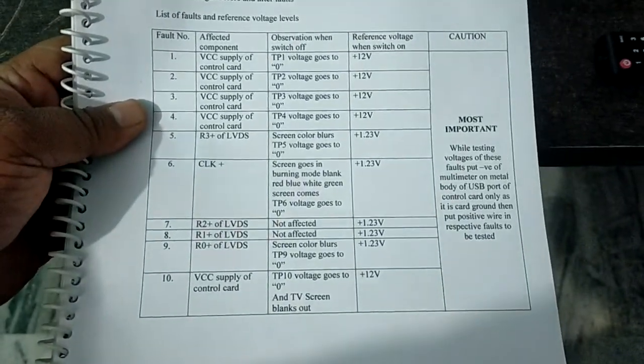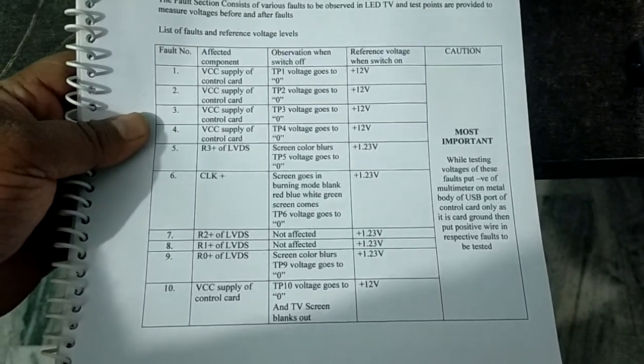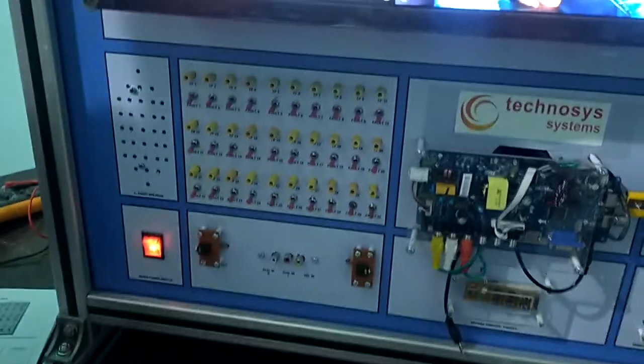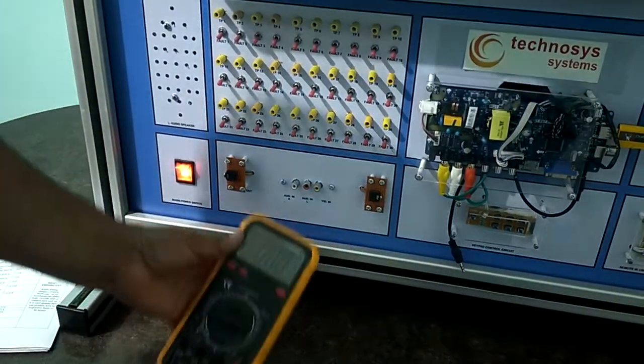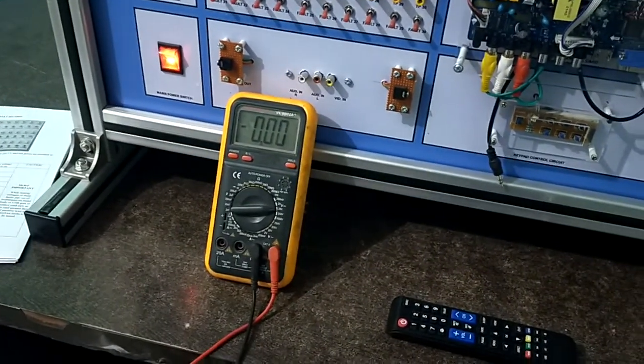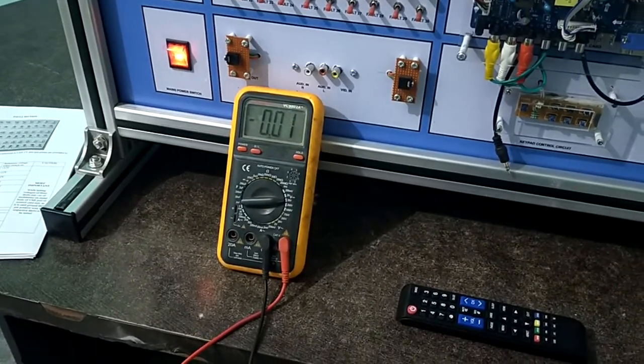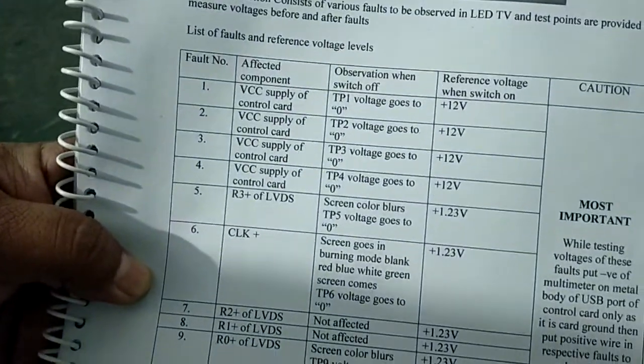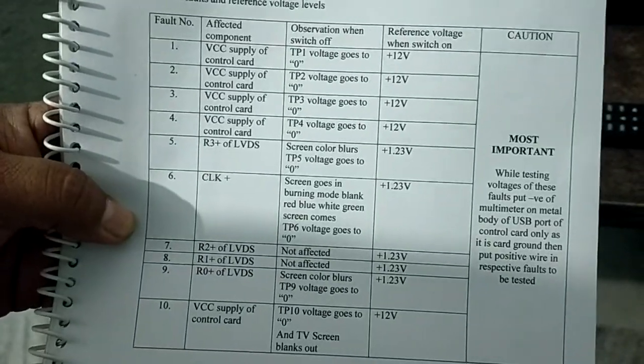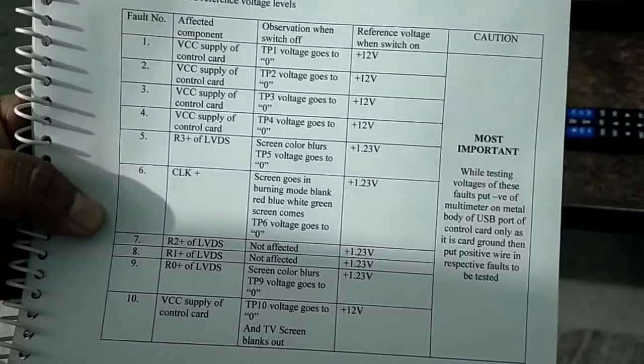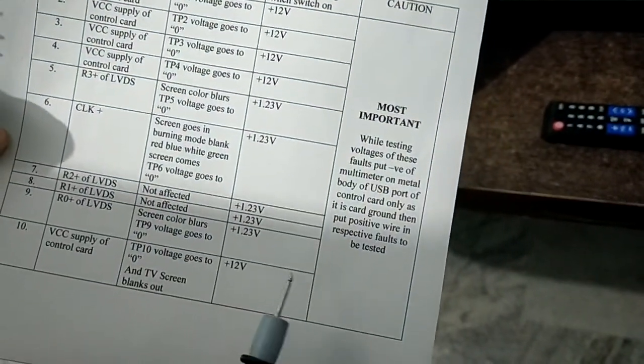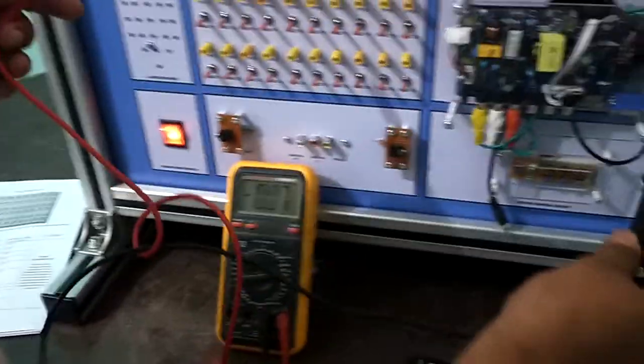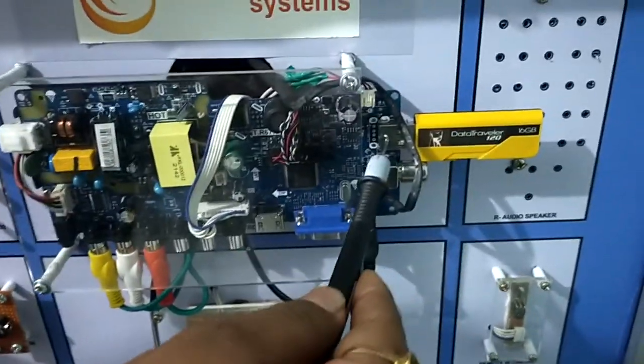So for fault number one to ten, the testing procedure would be like this. Here is the multimeter. Now as we can see in the manual, pin number 1, fault number 1, 2, 3, 4 are given and TP1, TP2 voltage is also given. So we can test it. For pin number 1 to 10, it is advisable to do what we are showing here. So what we have to do is we have to put the black wire on this steel body of this USB.